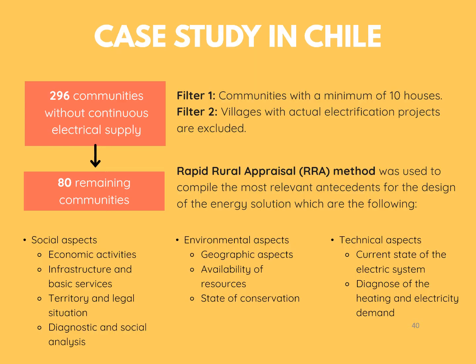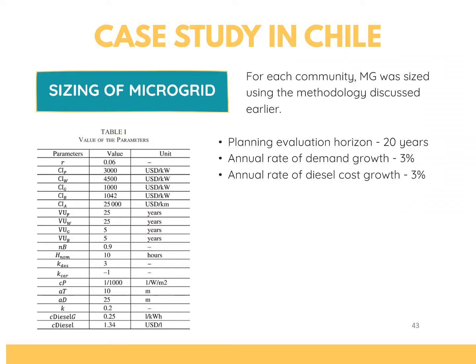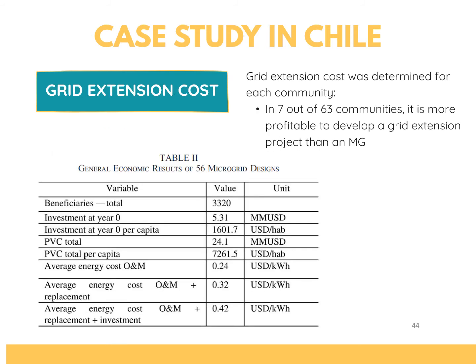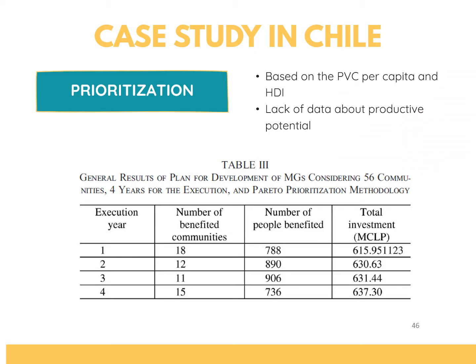This energy modeling method was applied to Chile for a case study. An initial 296 communities were determined to have no continuous electrical supply. After validation using the antecedents shown using the epidural appraisal method, 80 remaining communities were considered. This shows the HDI of the 80 communities. Only 63 out of 80 have 100% of the needed information to push through with the electrification plan. Microgrid was sized for each of the 63 communities and parameters were set for the evaluation. After computing, 7 out of 63 were more profitable with the grid extension project and were excluded, resulting in 56 remaining communities. Considering a 4-year time frame, the table shows the communities for electrification with equal annual investment, prioritized using HDI and PBC per capita.